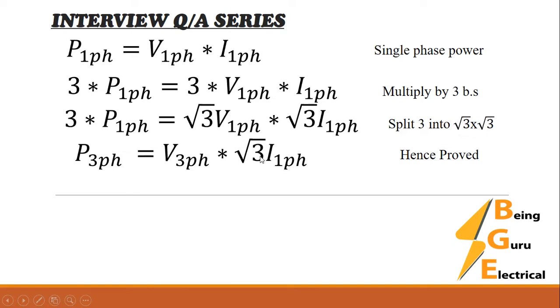this √3 will remain here with the phase current, because we cannot measure phase-to-phase current - each phase has its own current. So this √3 will remain.